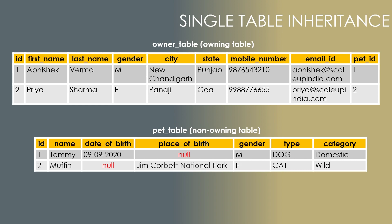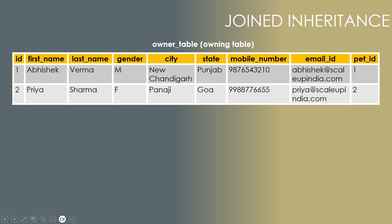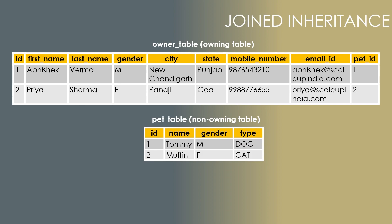That was all about single table inheritance. I'll provide a link to that previous video. Now in today's video we are covering joined inheritance. Our owner table remains the same without any change. The change is only in the pet table — it will now contain only the common variables: id as the auto-generated primary key, and name, gender, and type of the pet.